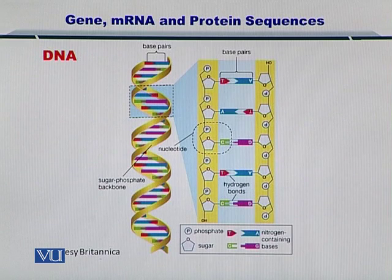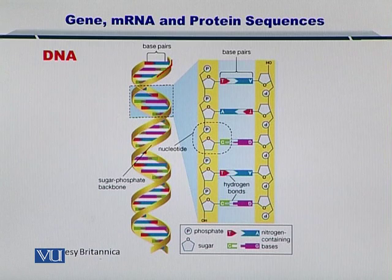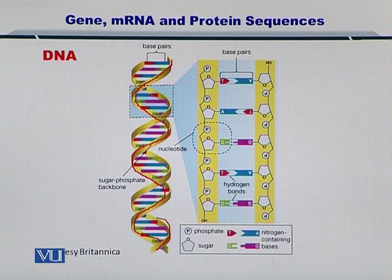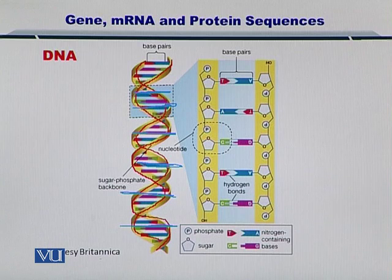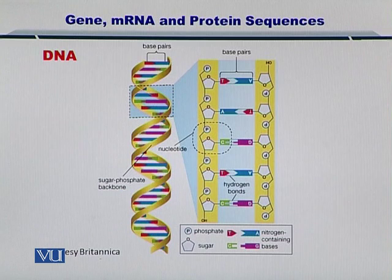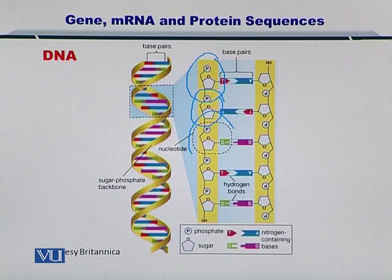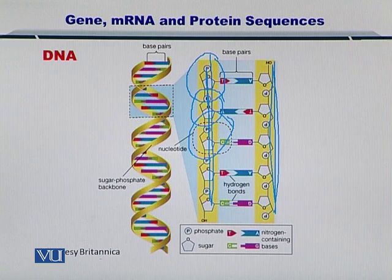If you look at the DNA, two things are obvious. The first is its double helical structure — one strand of nucleotides running in parallel to a second strand. Secondly, these two strands are held together by different base pairs as indicated by the colored lines. If you look closely, this resembles a phosphate and a sugar repeating on each strand in the anti-parallel direction.